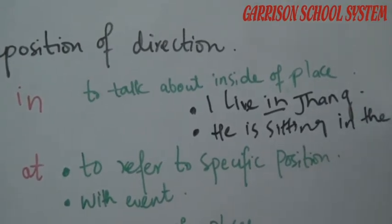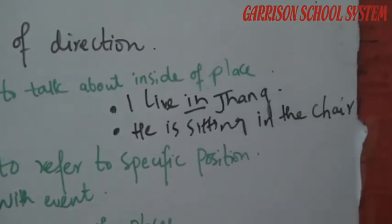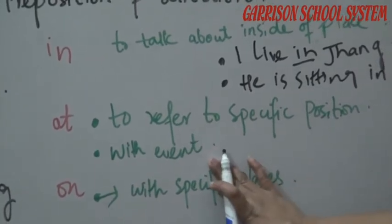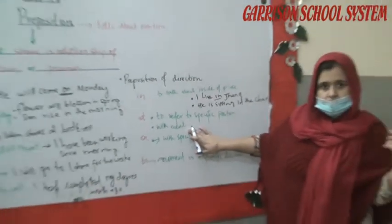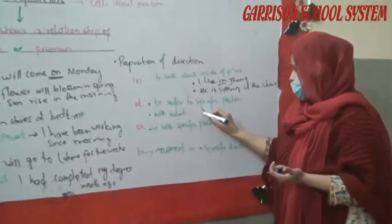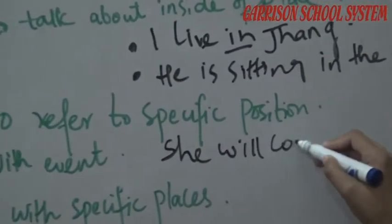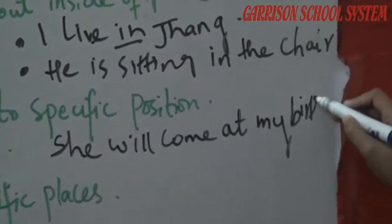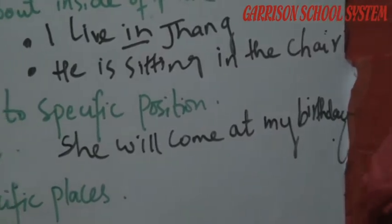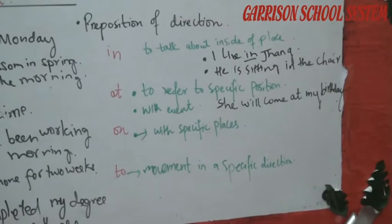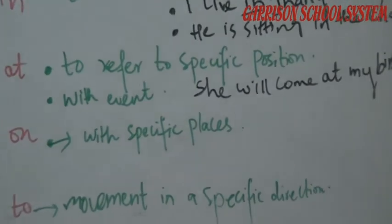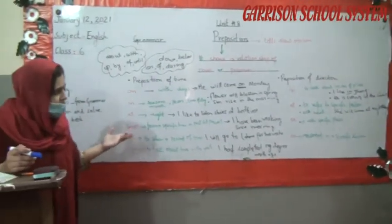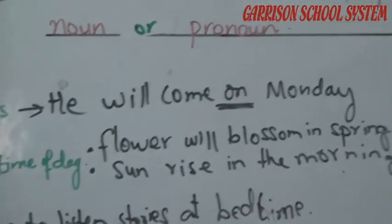'At' is used to refer to a specific position or place. For example: 'He will come at my birthday' — here 'at' is the preposition and 'my birthday' contains a pronoun. For position: 'I saw the chief minister at the airport' — this shows a location or specific place.